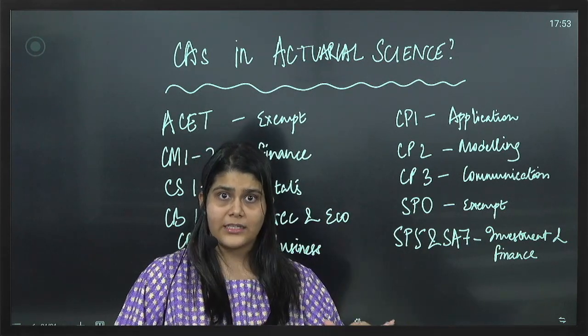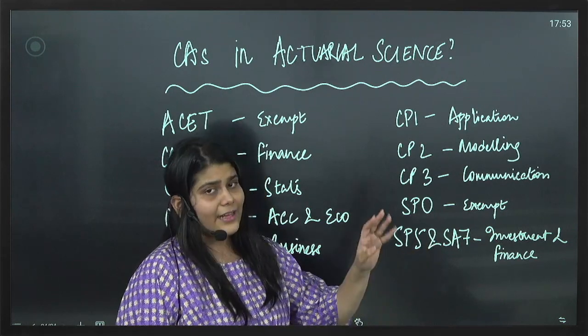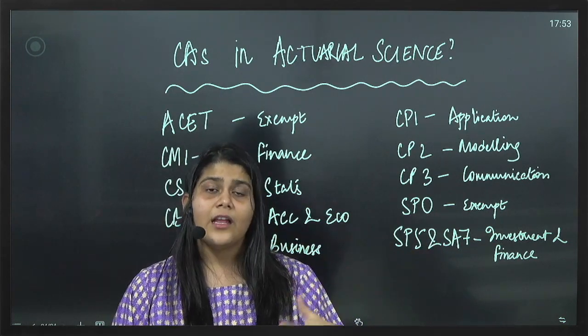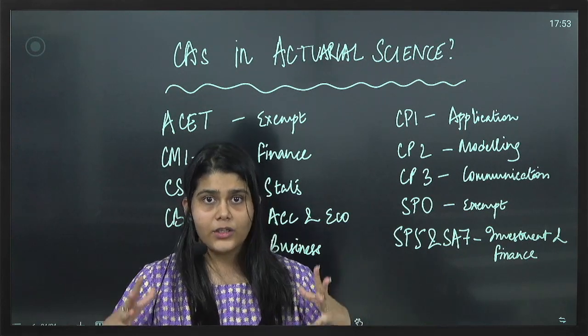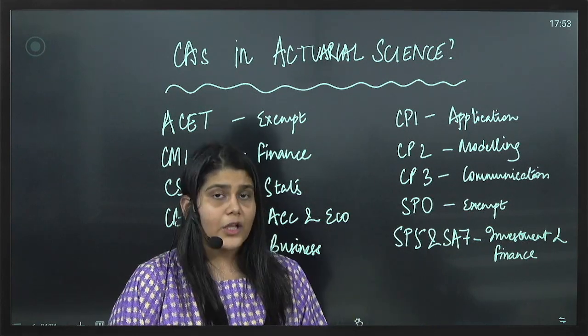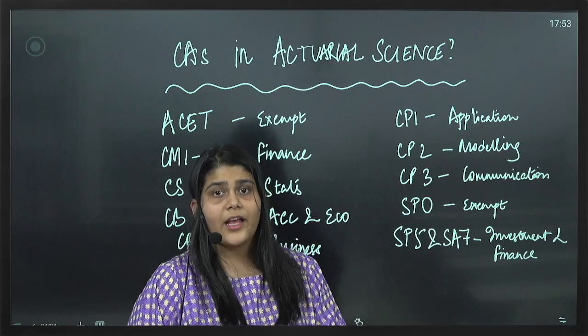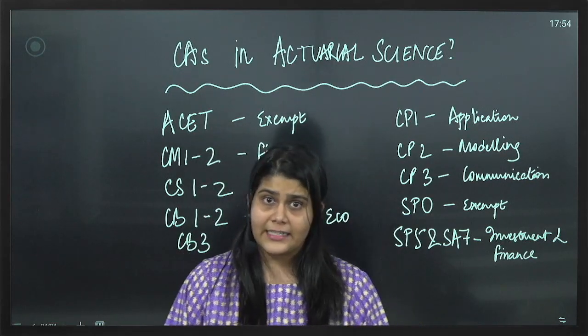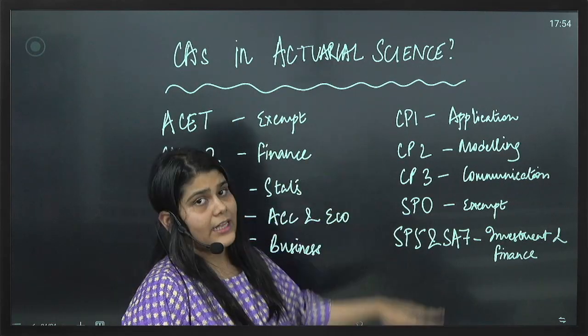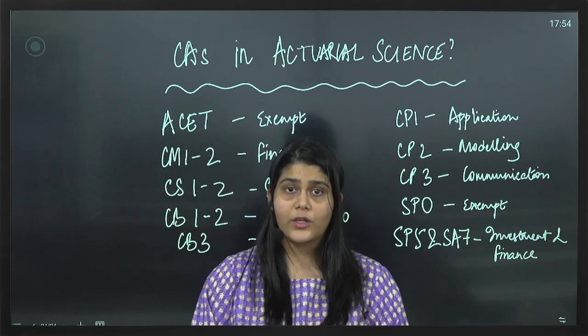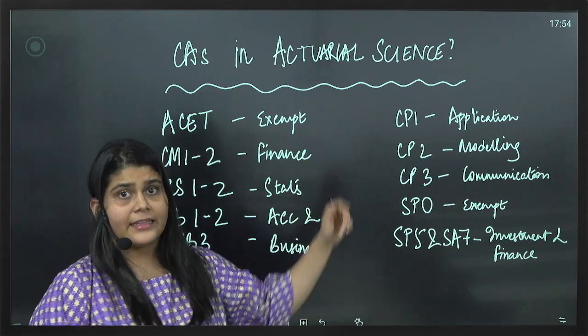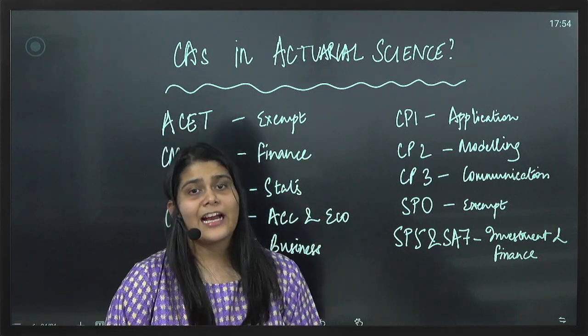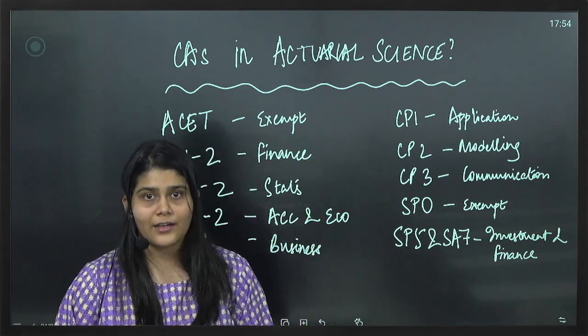As CA course is the base for these papers there are some advanced level topics but again completely based on Chartered Accountancy curriculum. So as a Chartered Accountant if you opt for actuarial science most of the course is nothing new for you. Because there is so much correlation in nearly all the papers that it is very easy to crack actuarial science after your Chartered Accountancy.